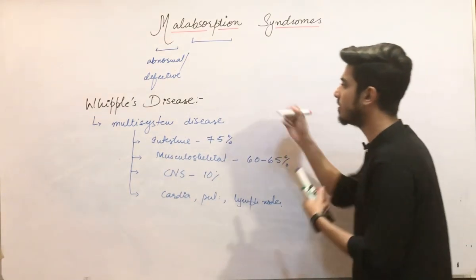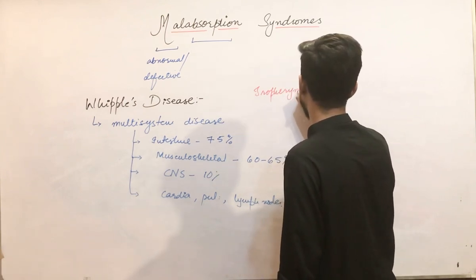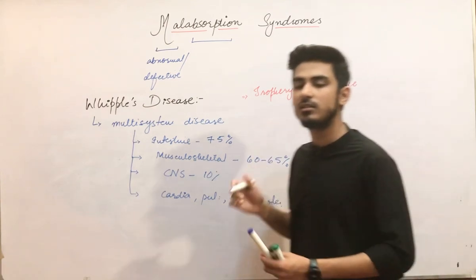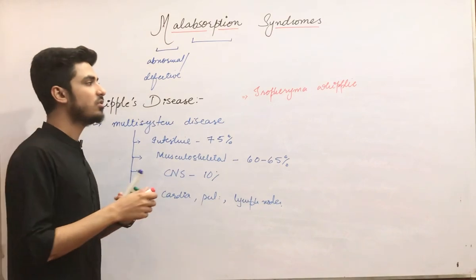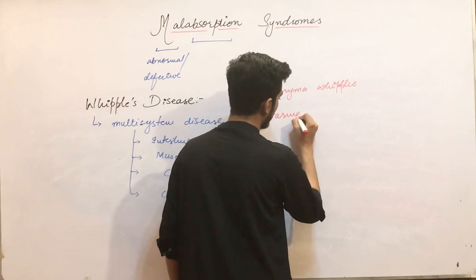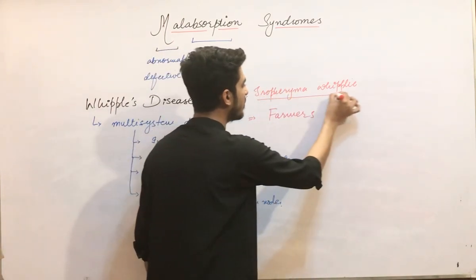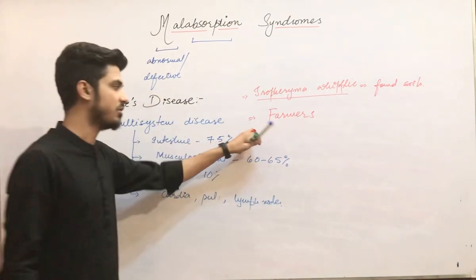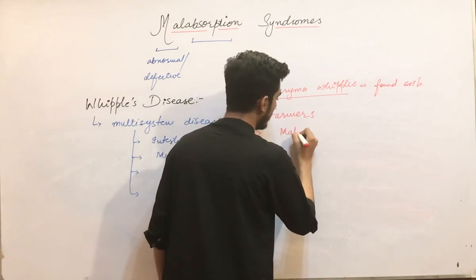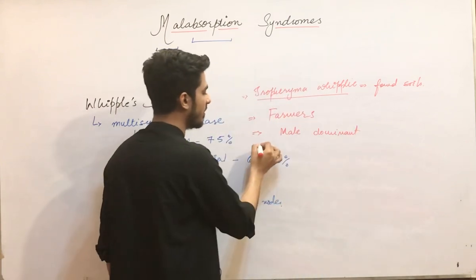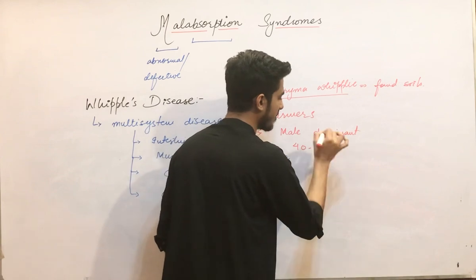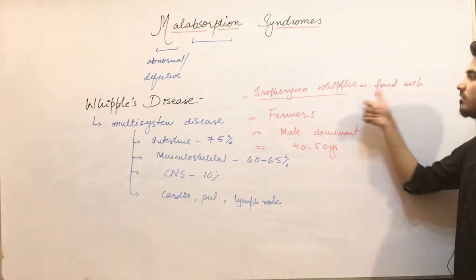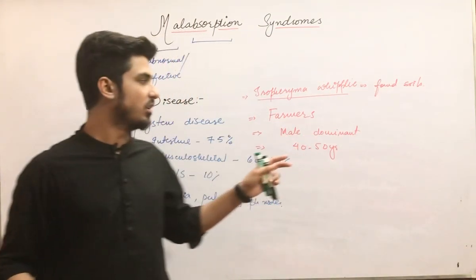The infectious agent causing Whipple's disease is Tropheryma whipplei. This disease is more common in farmers because Tropheryma whipplei is found mainly in soil. It is also a male-dominant disease, more common in males aged 40 to 50 years. In contrast, celiac disease was more common in females. So this is a brief introduction to Whipple's disease.